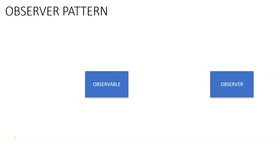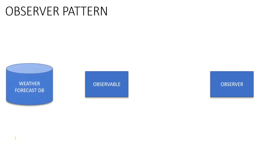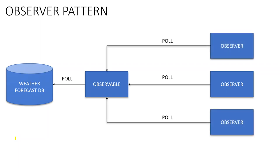In this example, there is a weather forecast database which updates data every minute or hour. The job of the observable is to change its state based on the weather forecast DB — it continuously polls the DB for data and changes its state. The observer polls the observable for any changes, and the observable also polls the weather forecast DB. There could be multiple observers all observing the same observable, and whenever data comes the observable sends back the response.